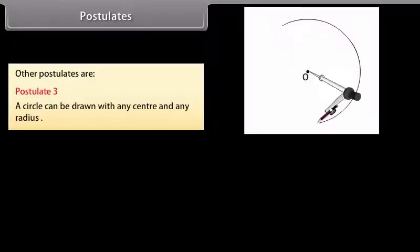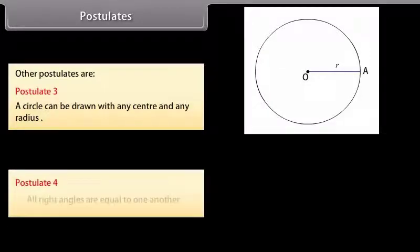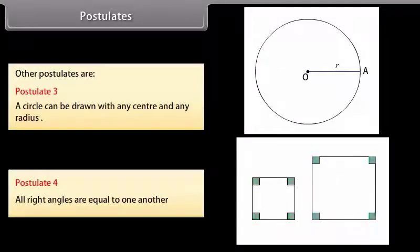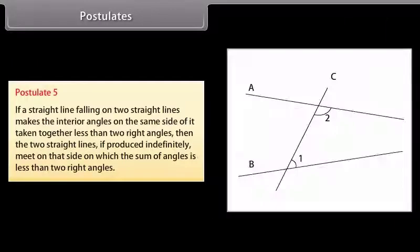Other postulates are: Postulate 3, A circle can be drawn with any center and any radius. Postulate 4, All right angles are equal to one another. And postulate 5 is: If a straight line falling on two straight lines makes the interior angles on the same side of it taken together less than two right angles, then the two straight lines, if produced indefinitely, meet on that side on which the sum of angles is less than two right angles.